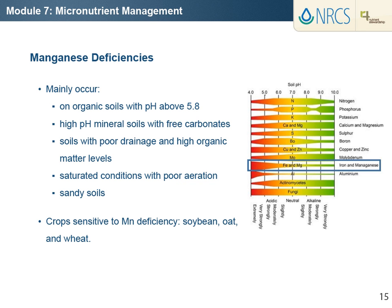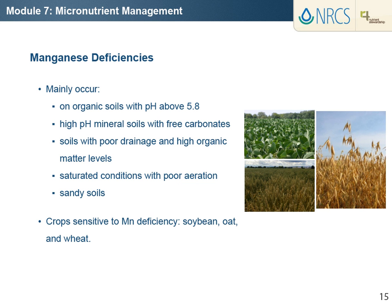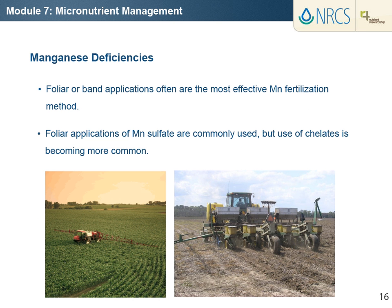Manganese deficiency mainly occurs on organic soils with pH above 5.8, high pH mineral soils with free carbonates, soils with poor drainage and high organic matter levels, saturated conditions with poor aeration, sandy soils, and over-limed soils having low cation exchange capacity. Crops sensitive to manganese deficiency include soybean, oat, and wheat. Due to interaction with soil that greatly reduces manganese solubility and plant availability, foliar or band applications are often the most effective manganese fertilization method. A common foliar treatment is application of manganese sulfate. However, the use of chelates is becoming more common, and use of a chelated manganese fertilizer for foliar or band application allows for lower application rates compared with broadcast application. In marginally deficient soils, banding acid-forming fertilizers with the planter can prevent or alleviate manganese deficiency by solubilizing soil manganese compounds.